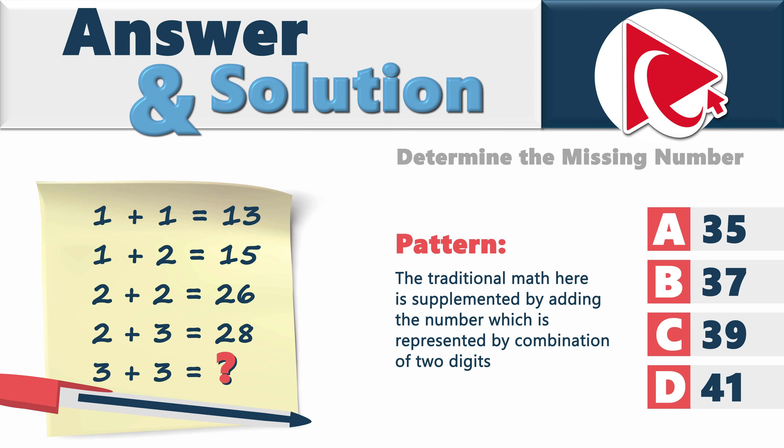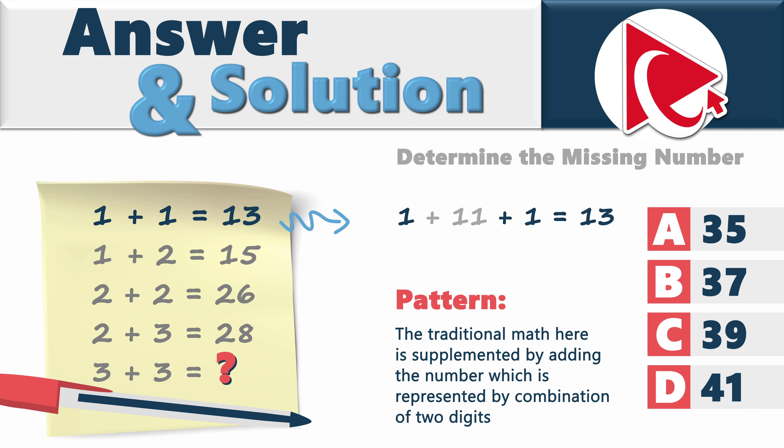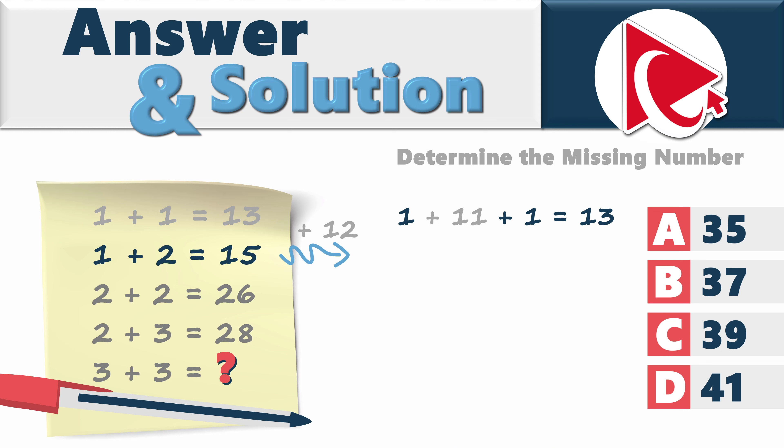To get to the final result, the traditional math here is supplemented by adding the number which is represented by combination of two digits. Let's look at the example. The initial first equation is 1 plus 1 equals 13. But in addition to 1 plus 1 math, we need to add 11, the combination of digits 1 and 1. So the final math would be 1 plus 11 plus 1, and then the result equals 13. This validates for all expressions. 3 plus 3 equals 3 plus 33 plus 3 and equals 39. So the correct answer here is choice C, 39.